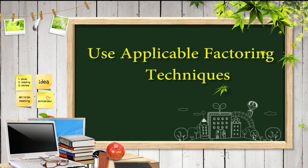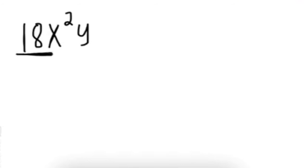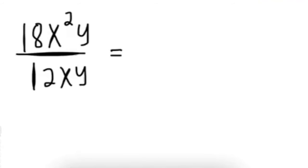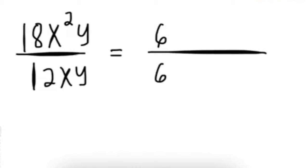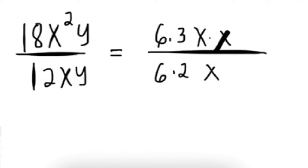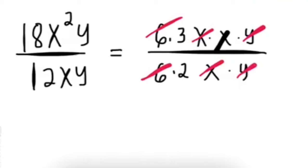Use applicable factoring techniques to simplify rational expressions and express to lowest terms. Simplify 18x squared y over 12xy. Get the greatest common factor of 18 and 12, which is 6 — so 6 times 3 over 6 times 2. The GCF of x squared is x: x times x over x. And the GCF of y is y: y over y. Cancel out the common factors — cancel 6, cancel x, cancel y — and copy the remaining term: 3x over 2. That is your answer.